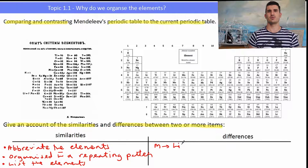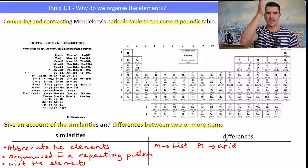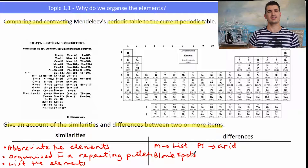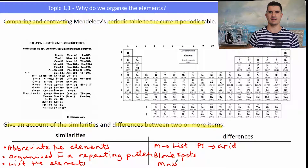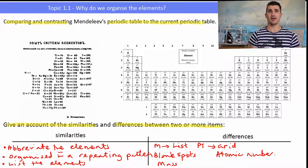As for the differences: Mendeleev's was more of a list, whereas the current periodic table has a grid structure with groups and periods. Mendeleev left blank spaces for elements not yet discovered, while the current periodic table has no gaps. His table was arranged by mass, whereas the current periodic table is arranged by atomic number — the number of protons — and also relates to electron configuration, which we'll touch on in an upcoming video.